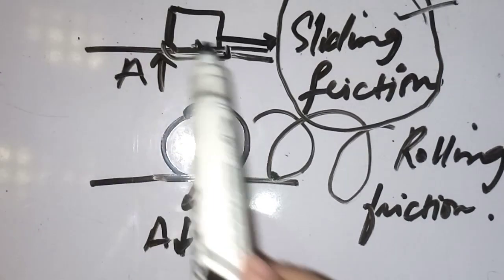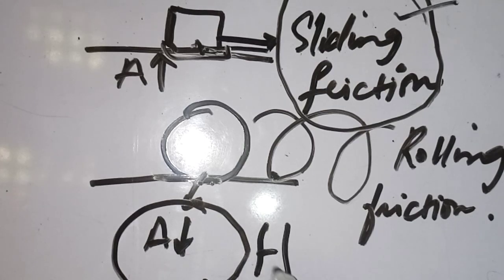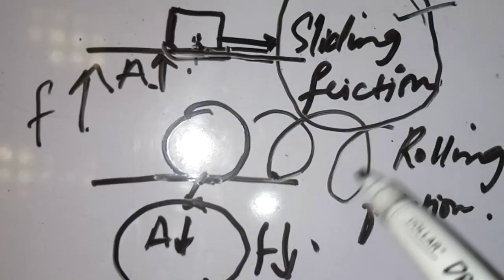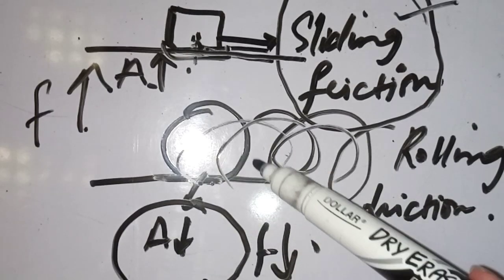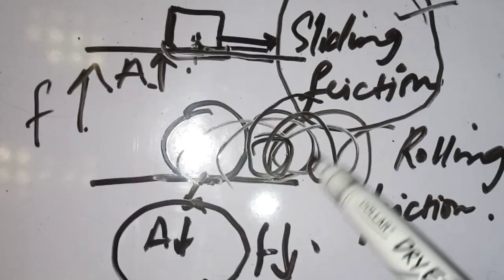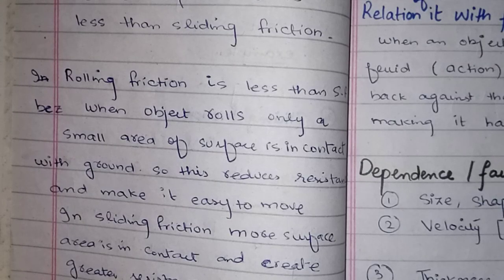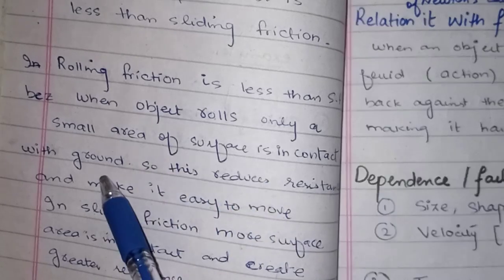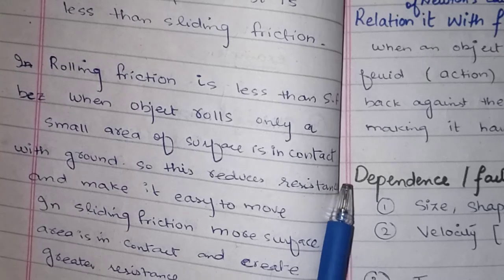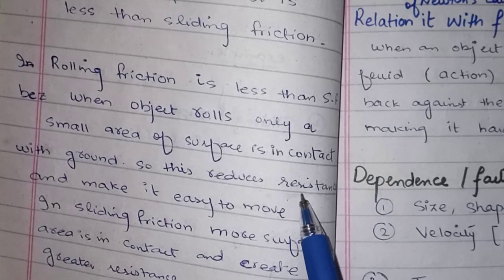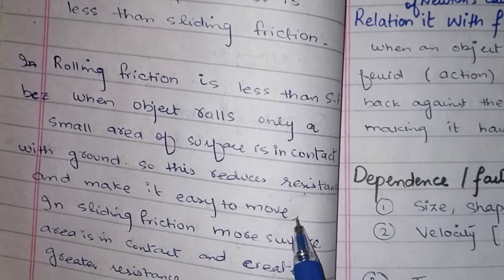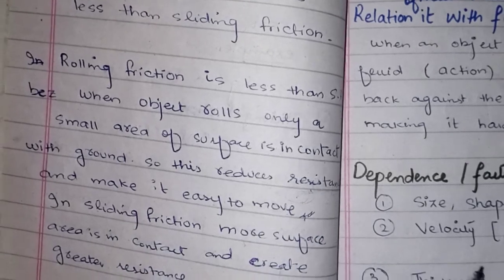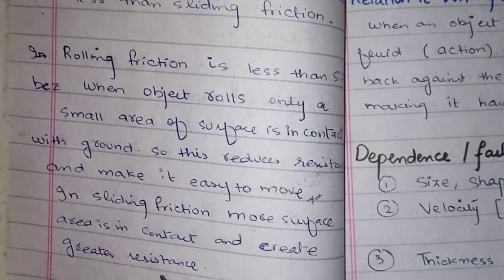If the contact area is less, then friction is less. Two surfaces in contact create friction, so less contact area means less interaction between surfaces, which reduces friction. When an object rolls, only a small area of the surface is in contact with the ground. This small contact area reduces resistance, making it easier to move — like tires rolling on a road. For sliding friction, more surface area is in contact, so resistance is greater and friction is higher.